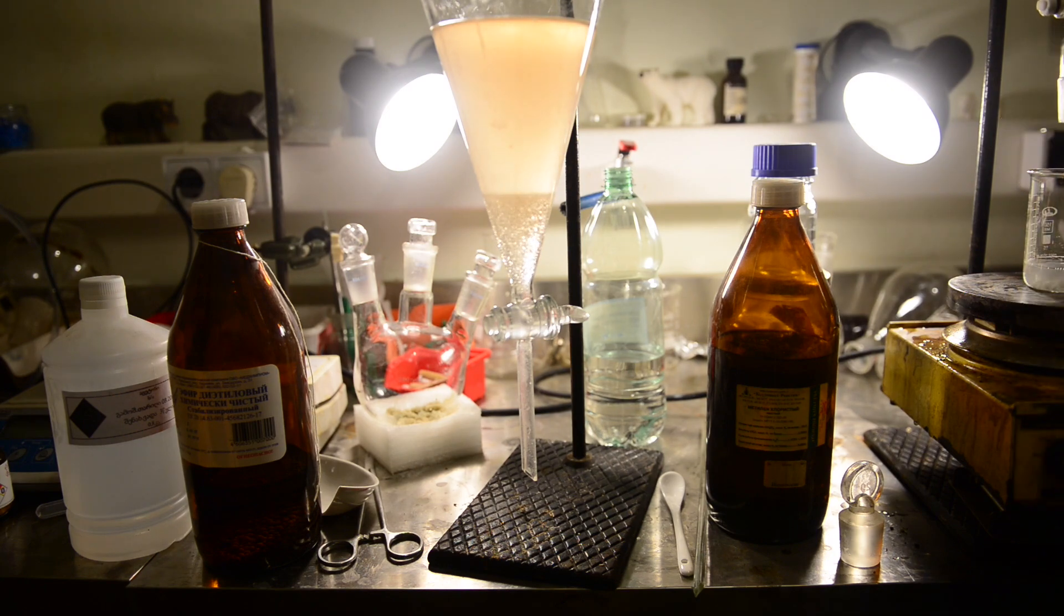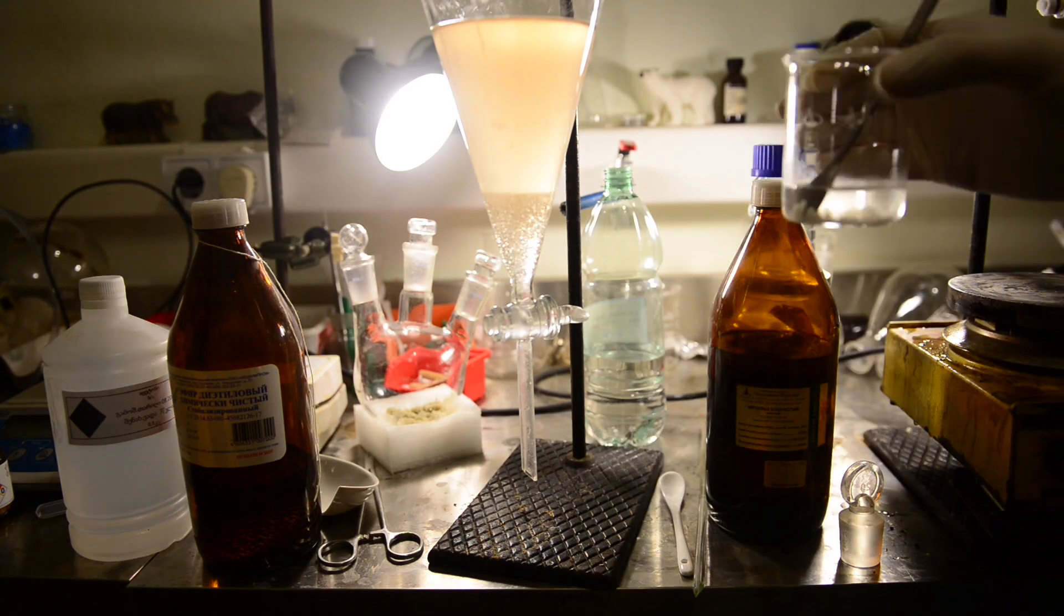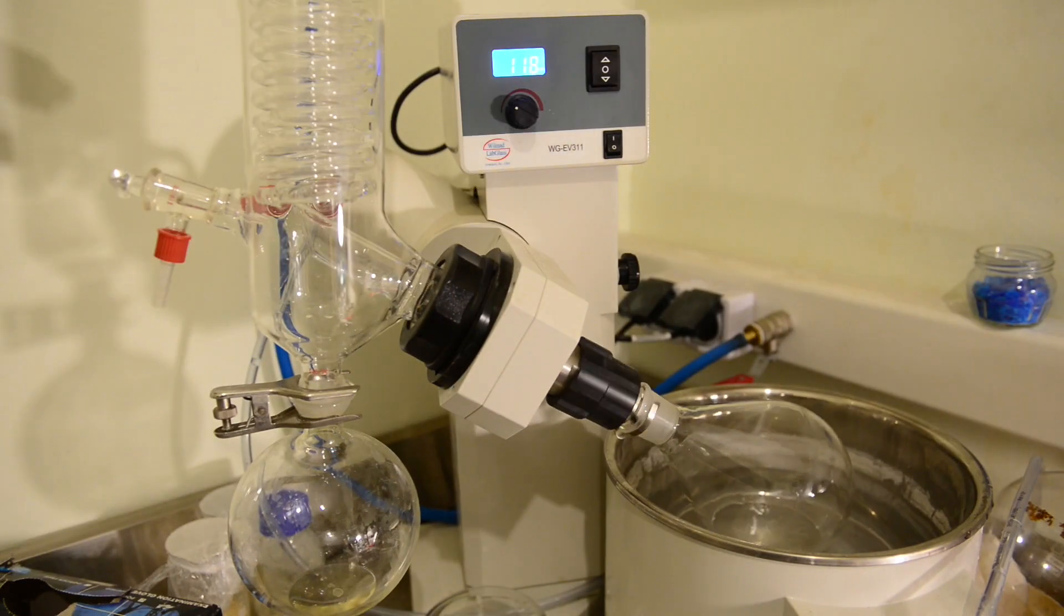Now we need to evaporate. We are charging our evaporation flask once again and connecting vacuum to the rotary evaporator. After evaporation yellowish transparent liquid is obtained.